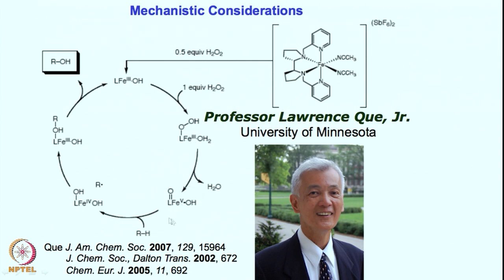So it is an iron V oxo-hydroxo intermediate that is generated once the iron II intermediate reacts with hydrogen peroxide — one and a half equivalents total required. These intermediates are fully active and very reactive. This iron V oxo-hydroxo intermediate can abstract a hydrogen atom from the organic substrate to give R-dot radical and an iron IV hydroxy intermediate. This hydroxo intermediate can then react with R-dot to give ROH which can go out. Essentially, we have synthesized a high-valent iron intermediate — iron V oxo-hydroxo — capable of reacting with organic substrate to give the hydroxylated product.